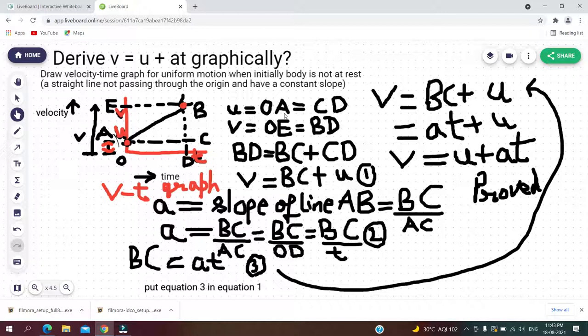So I can write u is equal to OA is equal to CD. Next, v is equal to OE. As OE and BD are parallel, I can also write that v is equal to OE is equal to BD.